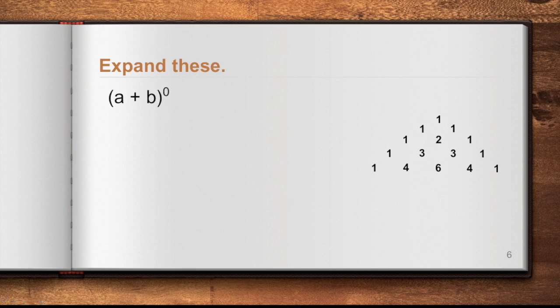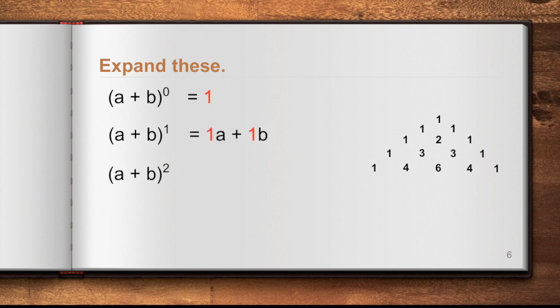Let's start with (a + b) to the power of 0. We know from the law of indices that any number raised to 0 is equal to 1. Now what about (a + b) to the power of 1? We know that a number raised to the power of 1 is equal to the number itself, so this is just equal to a + b. And then we have the special product (a + b) to the power of 2, which equals a squared plus 2ab plus b squared.